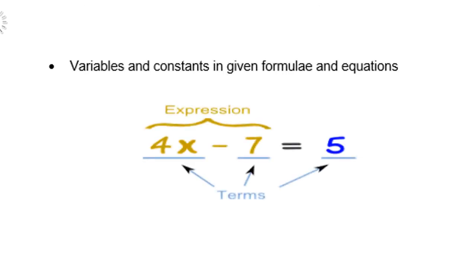If you look at the equation 4x minus 7 equals 5, then 4x minus 7 on the left hand side is the expression, or the algebraic expression. 4x, negative 7, and 5 each one is a term on its own. These are variables and constants in a given formula and equation.